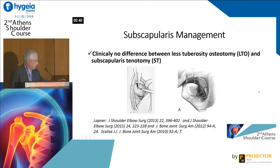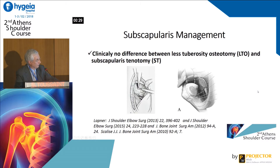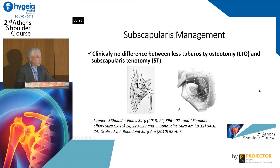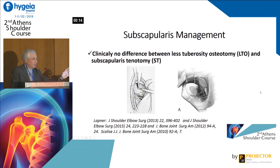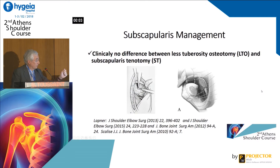For subscapularis management, there is no big difference between tenotomy and tuberosity osteotomy, but repair is very important. Personally, I always perform tenotomy and use a trick: I use the biceps tendon to augment the suture of the subscapularis, performing the tenotomy at the same time as the subscapularis tendon repair.